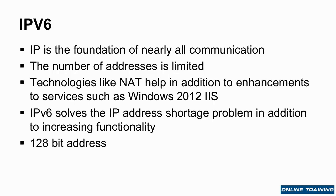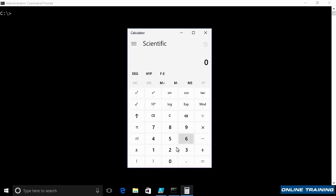IP is the foundation of pretty much every type of computer communication today. It enables machines to talk to each other on the same network, and it enables machines on opposite sides of the planet to communicate over the public internet. But as previously mentioned, the number of addresses is limited — it is a 32-bit address, which means 2 to the power of 32, giving us a little over 4 billion addresses.